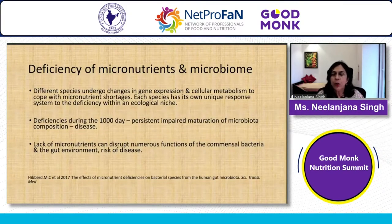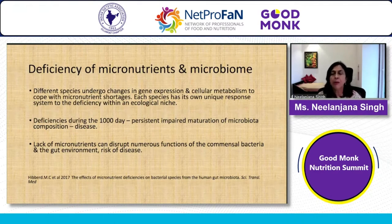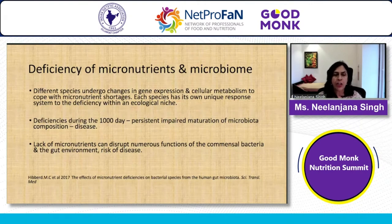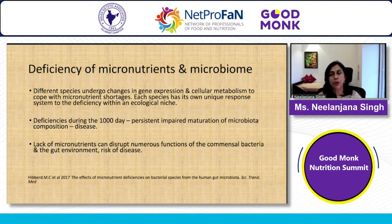What happens when there is a micronutrient deficiency? Each species undergoes different changes — it could be a change in their gene expression or metabolism to cope with these shortages. Every species has its own unique response. Micronutrient deficiency occurring in the first thousand days could be persistent, causing impaired maturation of gut microbiota and changes in composition, leading to increased risk of disease. These lack of micronutrients can disrupt the numerous functions of commensal bacteria, change the gut environment, and increase disease risk.